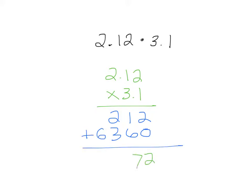2, 7, 5, 6. Now we count. There's 1, 2, 3 numbers behind a decimal. So we will count 1, 2, 3. It will be 6.572. There you go.